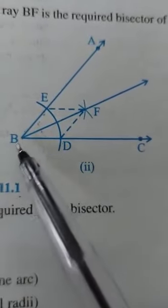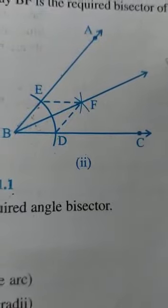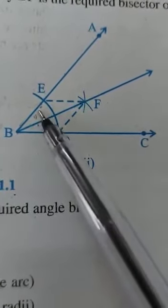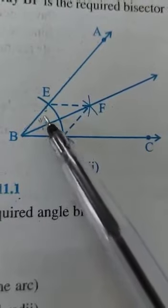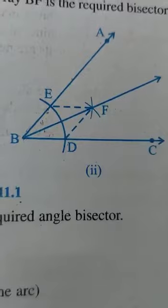Now, using the ruler and pencil, join BF and extend it further. We can see these two angles are equal. That means BF is the angle bisector of ABC.